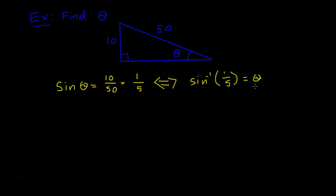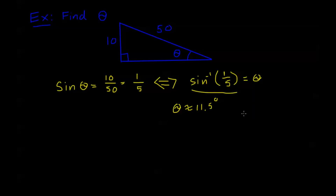Sine inverse of 1/5 equals theta. Keep in mind whatever mode your calculator is in — degree mode or radian mode — that's the answer you're going to get for theta. With the calculator in degree mode, plugging in sine inverse of 1/5, we get that theta is about equal to 11.5 degrees. If you need an answer in radians, just switch to radian mode, plug in the same thing, and it will output theta in radians.